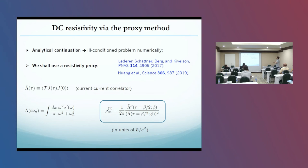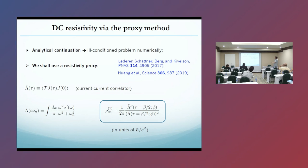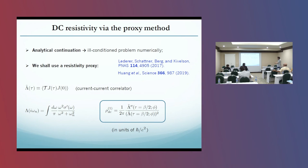As I said, calculating DC resistivity is very tricky because you have to do analytical continuation, which is an ill-conditioned problem numerically. So we are going to use a resistivity proxy put forward by two works here. We start from a current-current correlator and do a Fourier transform — this is the Matsubara correlator, which relates the current-current correlator to the real part of the optical conductivity. We use this resistivity proxy, which is the second derivative of lambda-tilde over lambda-tilde squared.